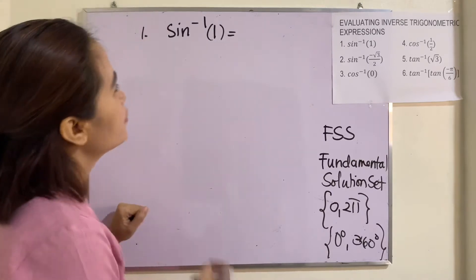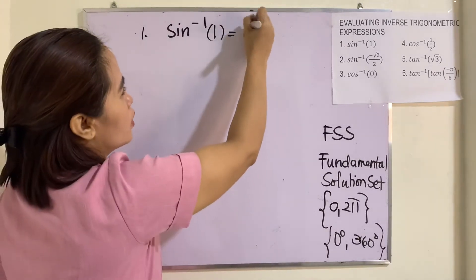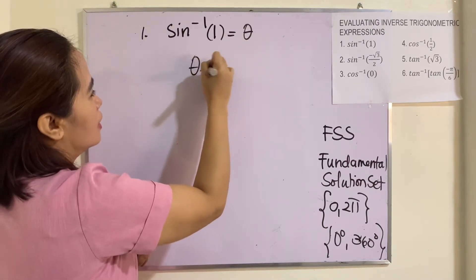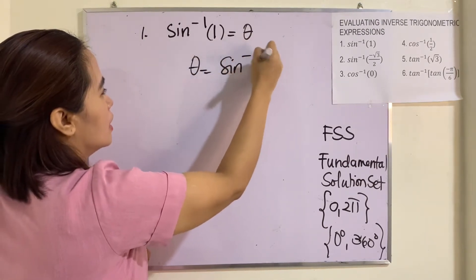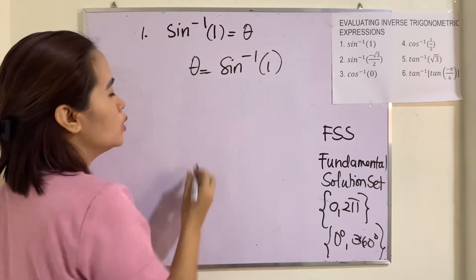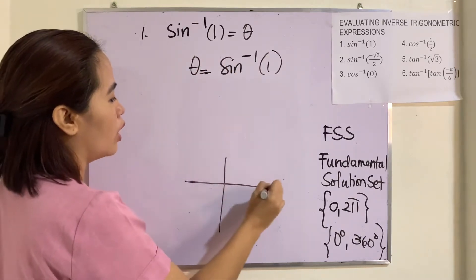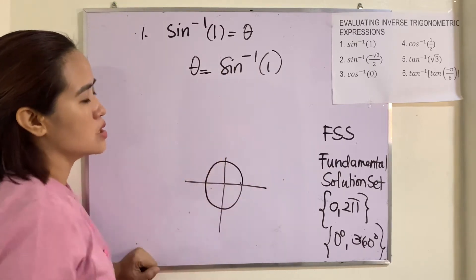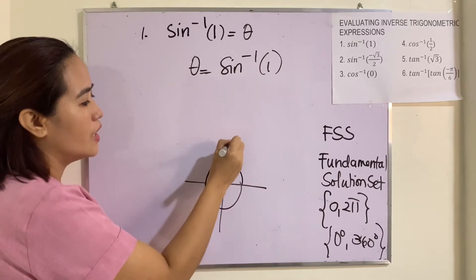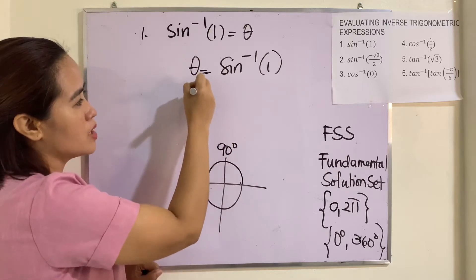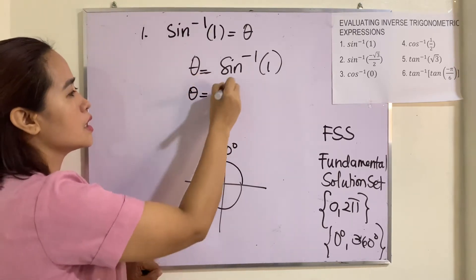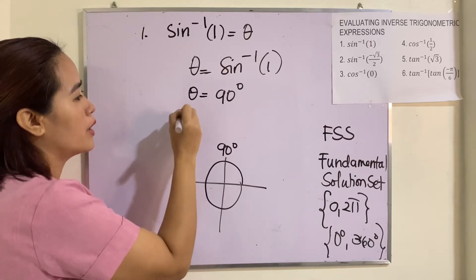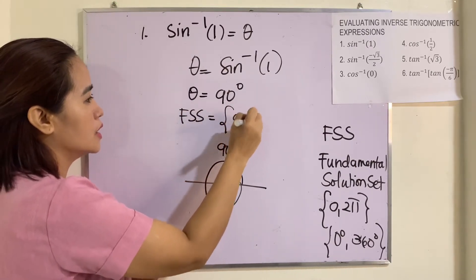Example 1: arc sine of 1. We are looking for the value of theta — that is an angle. We look for the value of theta in which the sine function is equal to 1. So this is 90 degrees. Therefore, our FSS is 90 degrees.